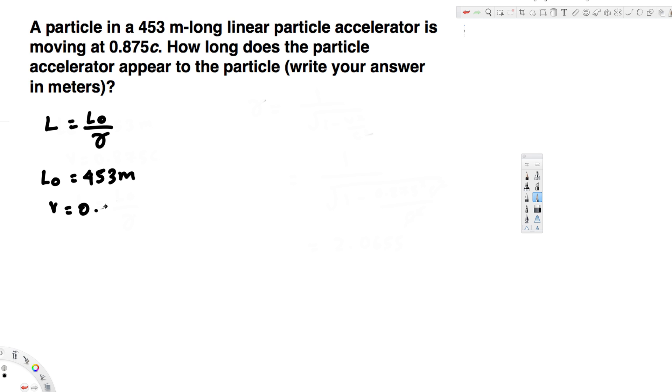Now let's find out the gamma. Gamma can be calculated using 1 over the square root of 1 minus v squared over c squared. Now let's go ahead and plug the values.